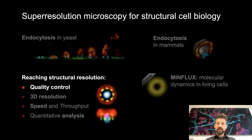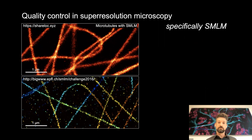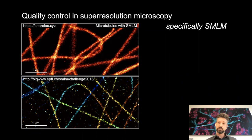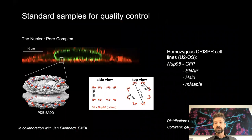Now I would like to change gears and talk about technical developments to push super-resolution microscopy to structural scales. An important but long-neglected topic is quality control, which has not been established for the field of localization microscopy, making it very difficult to decide if our microscopes are as good as they were a year ago or as good as those elsewhere. Here you see two publicly available datasets showing microtubules imaged with basically the same technique, but they don't look exactly the same. The reason can be manifold: the microscope, imaging conditions, labels, sample preparation protocol, or analysis software. What we really need is a sample that is the same every time and everywhere we look at it — a standard sample.